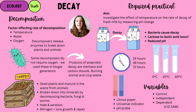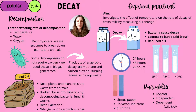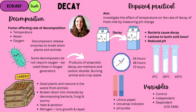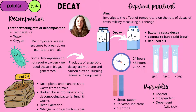For the required practical, the aim is to investigate the effects of temperature on the rate of decay of fresh milk by measuring pH change. Bacteria decay lactose in milk to form lactic acid, reducing pH and spoiling the milk. Milk samples are placed in test tubes at 5°C, 25°C, and 40°C water baths and left for 24, 48, and 72 hours. pH is tested using litmus paper, universal indicator, or pH probes — pH probes give the most accurate quantitative results. Remember your variables: control variables, independent variable, and dependent variable.